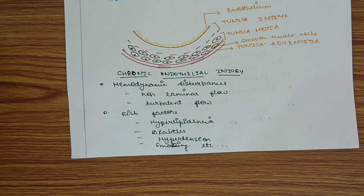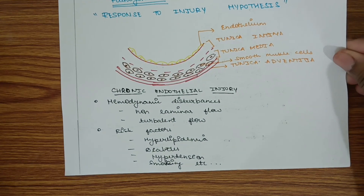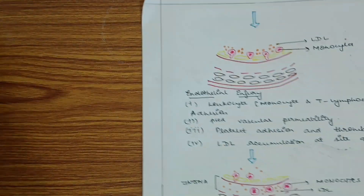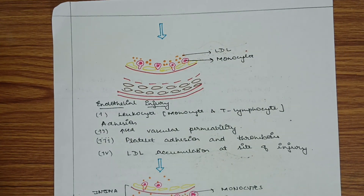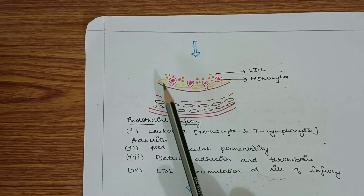Chronic endothelial injury can also occur because of hemodynamic disturbances. Normally, blood flow is laminar and non-turbulent, flowing in layers at a constant speed. When hemodynamic disturbances occur, the blood flow becomes non-laminar and turbulent, which can also cause chronic injury. Due to injury, both WBCs and platelets are attracted to the site, and leukocytes including monocytes and T-lymphocytes adhere to the tunica intimal layer.